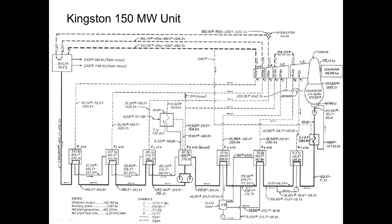The symbols: the degree symbol is Fahrenheit, H is enthalpy in BTUs per pound, the number sign is pounds per hour. A solid line is water and a dashed line is steam. Main steam comes out of the boiler at 1,815 PSIA — that's 1,800 PSIG allowing 15 for atmospheric pressure — at 1,000 degrees with an enthalpy of 1,480.3 BTUs per pound, rolling into the high pressure turbine.